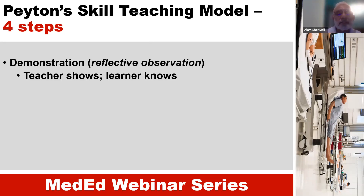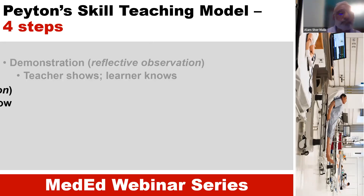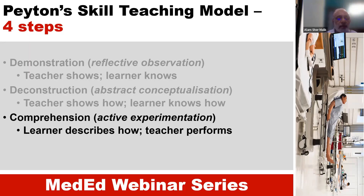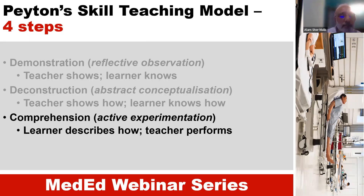Demonstration maps to reflective observation. Reconstruction or abstract conceptualization is where the teacher shows how and the learner knows how. Then comprehension is active experimentation, where the learner describes how and the teacher performs — that is the third step. And the fourth step is performance, where students show how they do it.